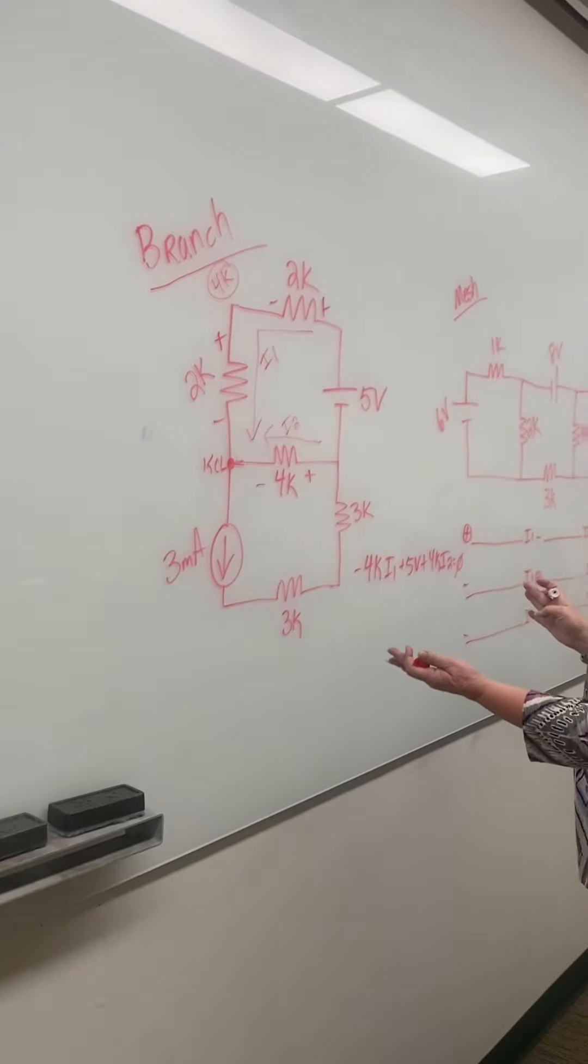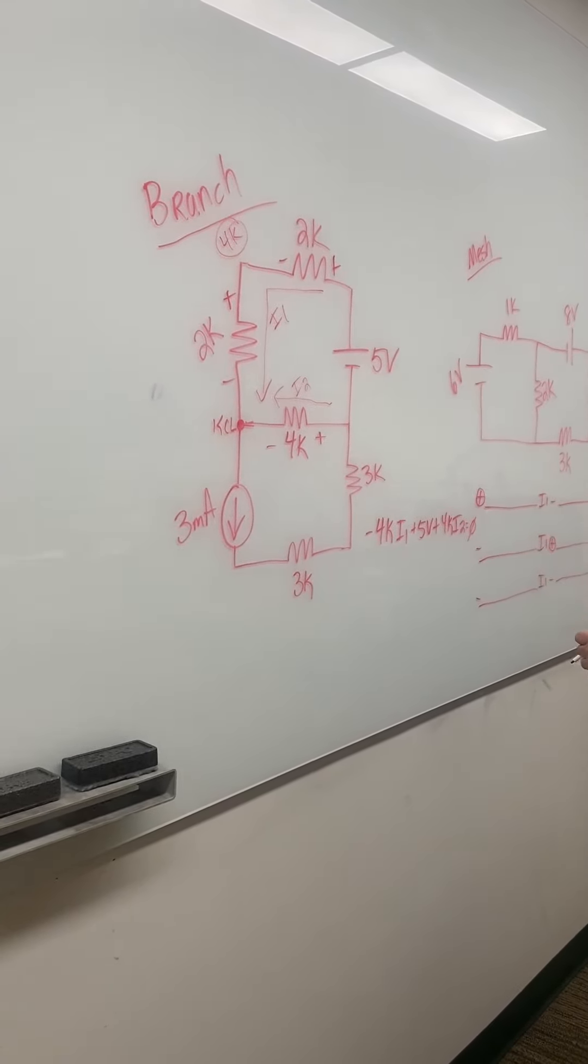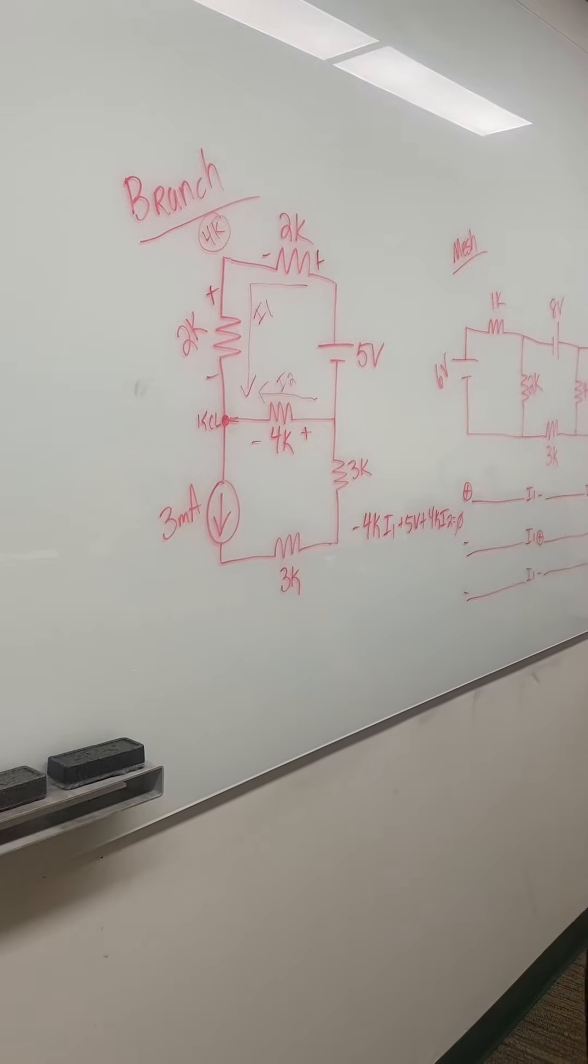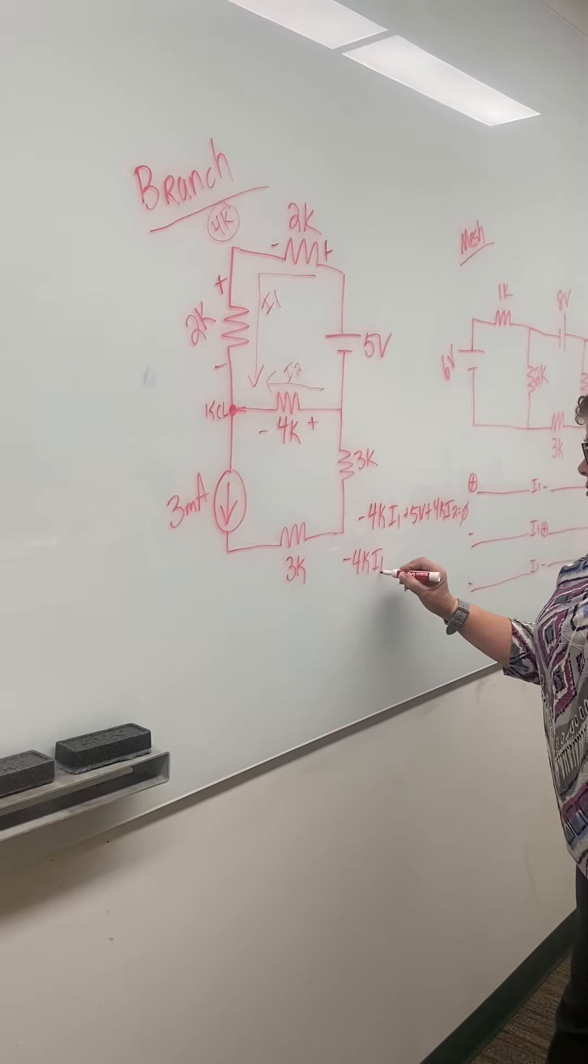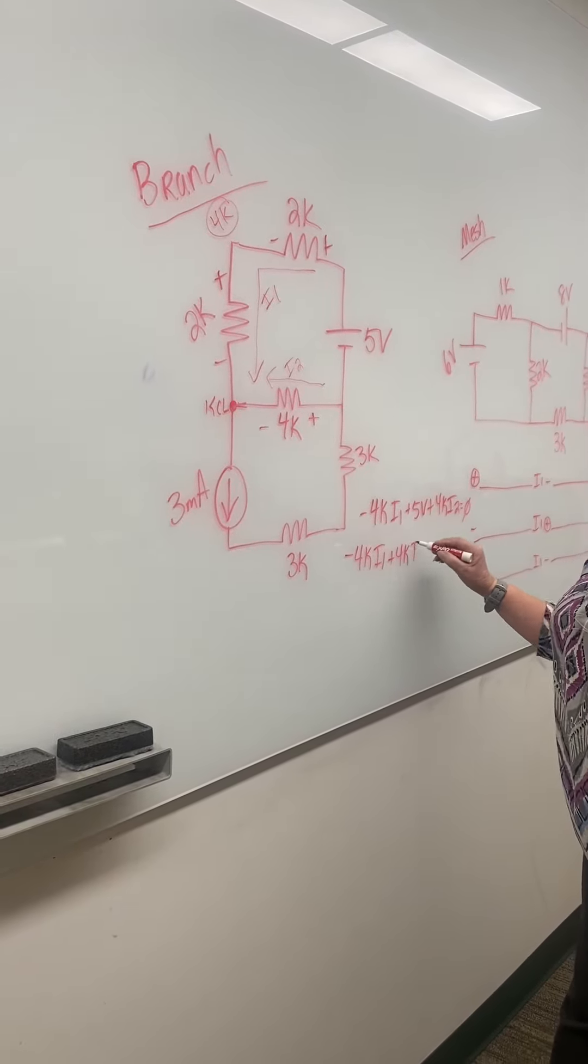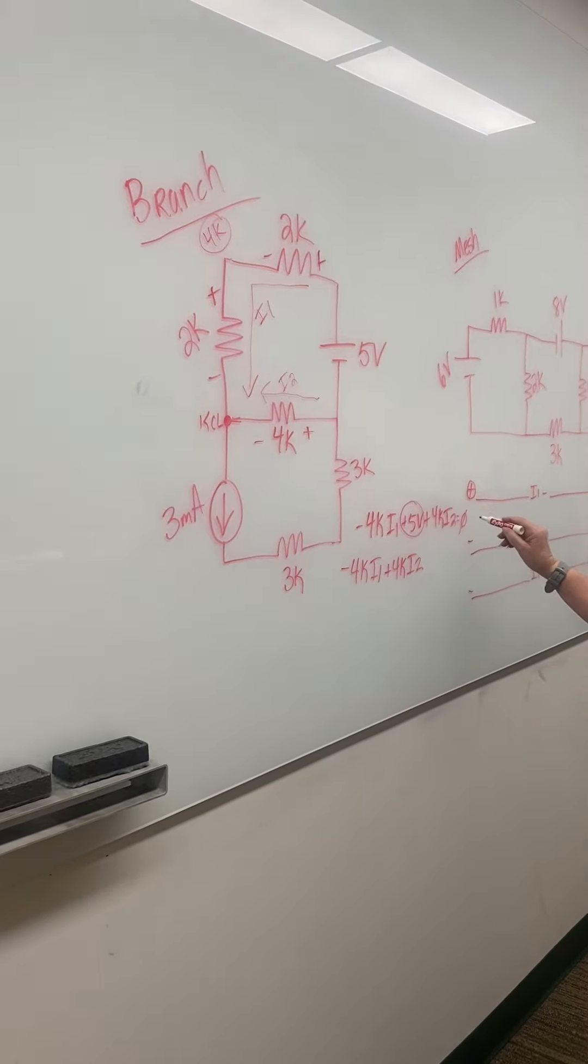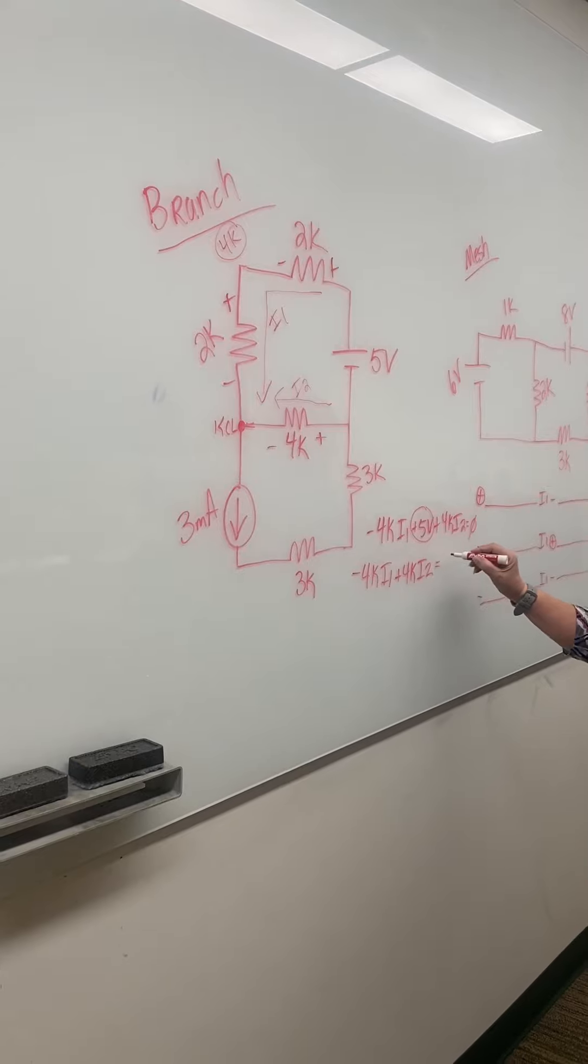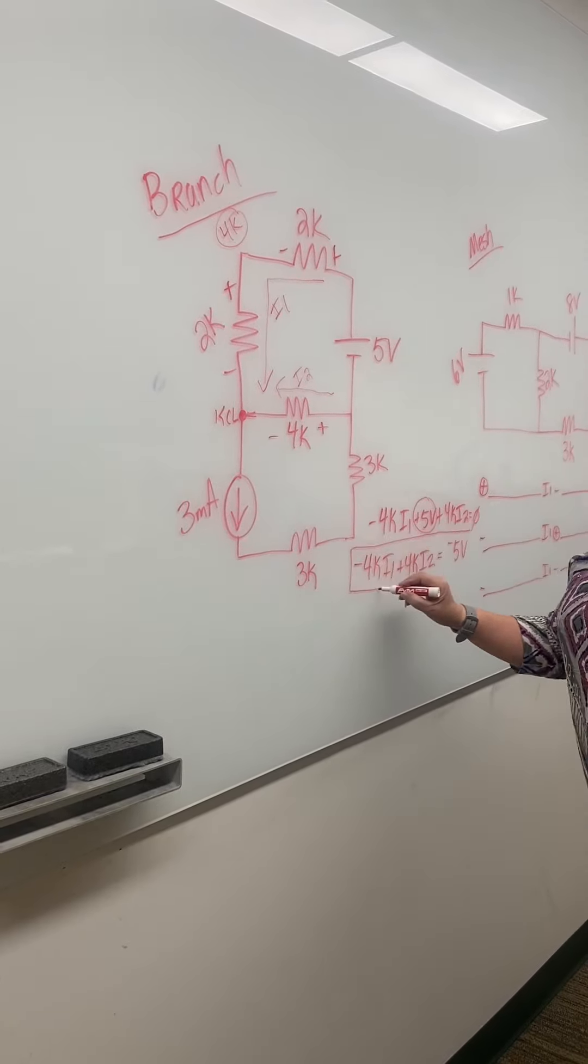I have to fix this equation. I1, I2, if there was an I3 that would go next, equals the voltage. So here I have negative 4K I1 plus 4K I2 because this voltage has to go to the other side of the equation. It becomes a negative 5 volts. That's the first equation.